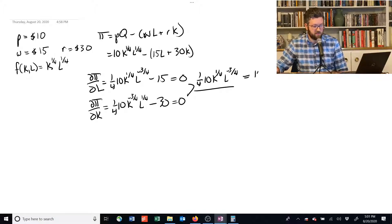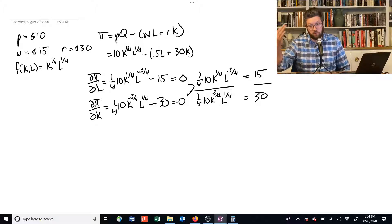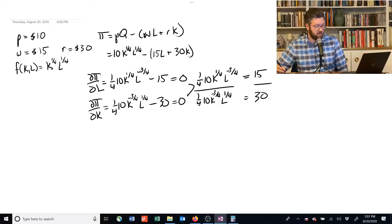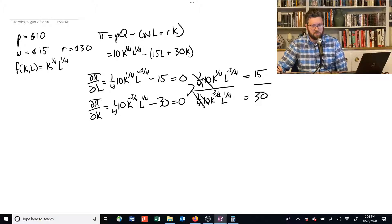First let's say that's equal to 15, because we add 15 to both sides. On this side, we have 1/4 times 10 times K to the negative 3/4 times L to the 1/4, and that's equal to 30 if we add the 30 to both sides. And we're going to divide sort of the one equation by the other. And you can see immediately that this gets rid of a lot of junk. These 1/4s are gone. These 10s are gone.